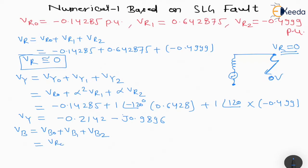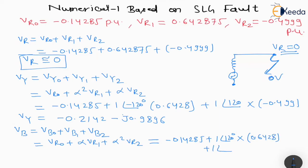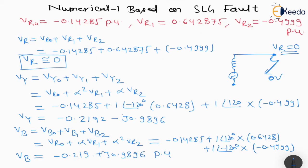For Vb = Vb0 + Vb1 + Vb2, where Vb0 = Vr0, Vb1 = α·Vr1, Vb2 = α²·Vr2. Putting all values: (-0.14285) + 1∠120° × 0.6428 + 1∠-120° × (-0.4999). So Vb = 0.219 + J0.9896 per unit.